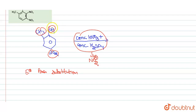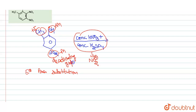OH has a lone pair on oxygen giving it a +M effect. CS₃ has a +I inductive effect. But NO₂ has a −M effect because nitrogen is in a pi bond with the more electronegative oxygen. So NO₂ is a deactivating group, whereas CS₃ and OH are activating groups. Since +M effect is more powerful than +I, OH is the more activating group.